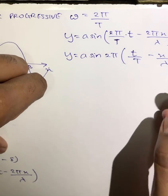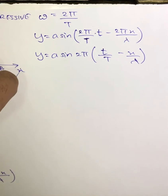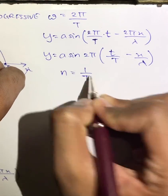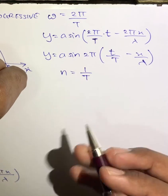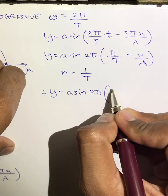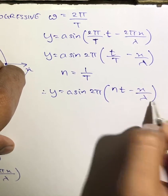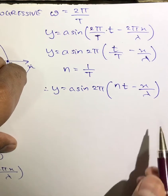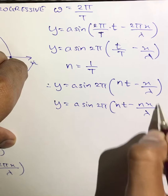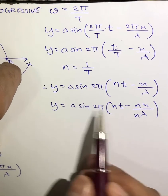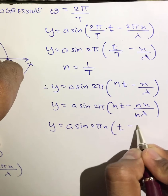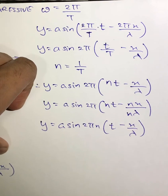We can further modify this equation. Frequency n is nothing but 1/T, so instead of 1/T we write n. Therefore y = a sin 2π(nt - x/λ). Multiplying the numerator and denominator by n, we get y = a sin 2π(nt - nx/nλ). Taking n common, therefore y = a sin 2πn(t - x/nλ).